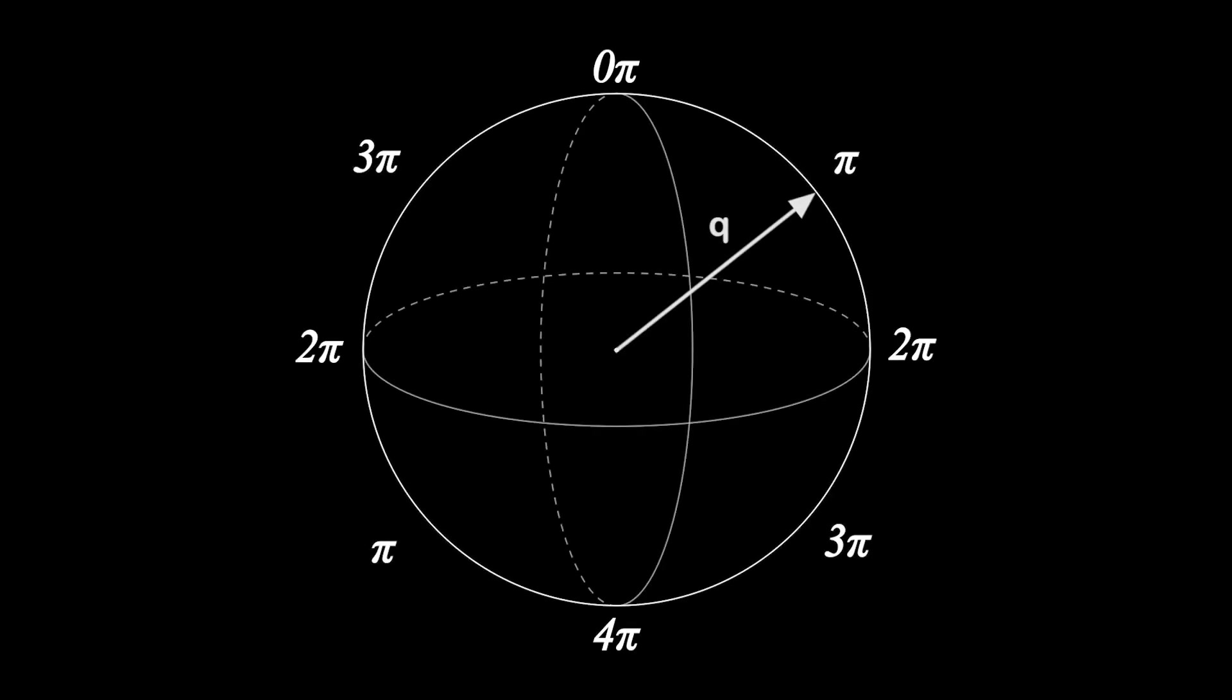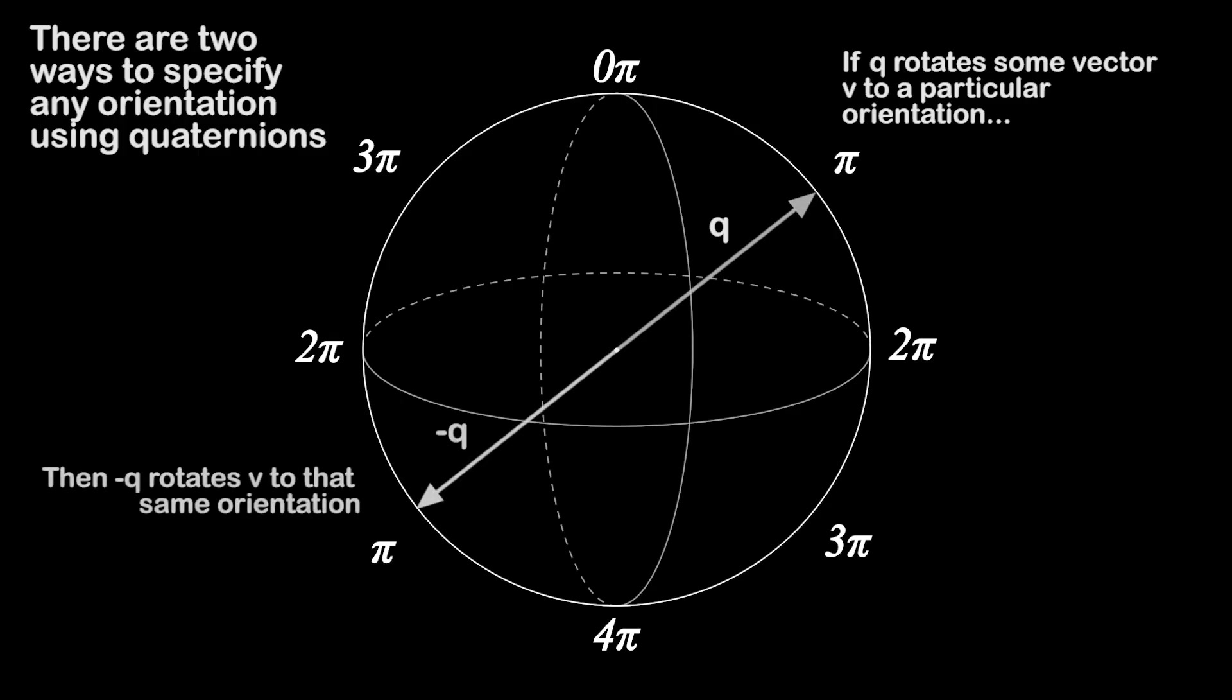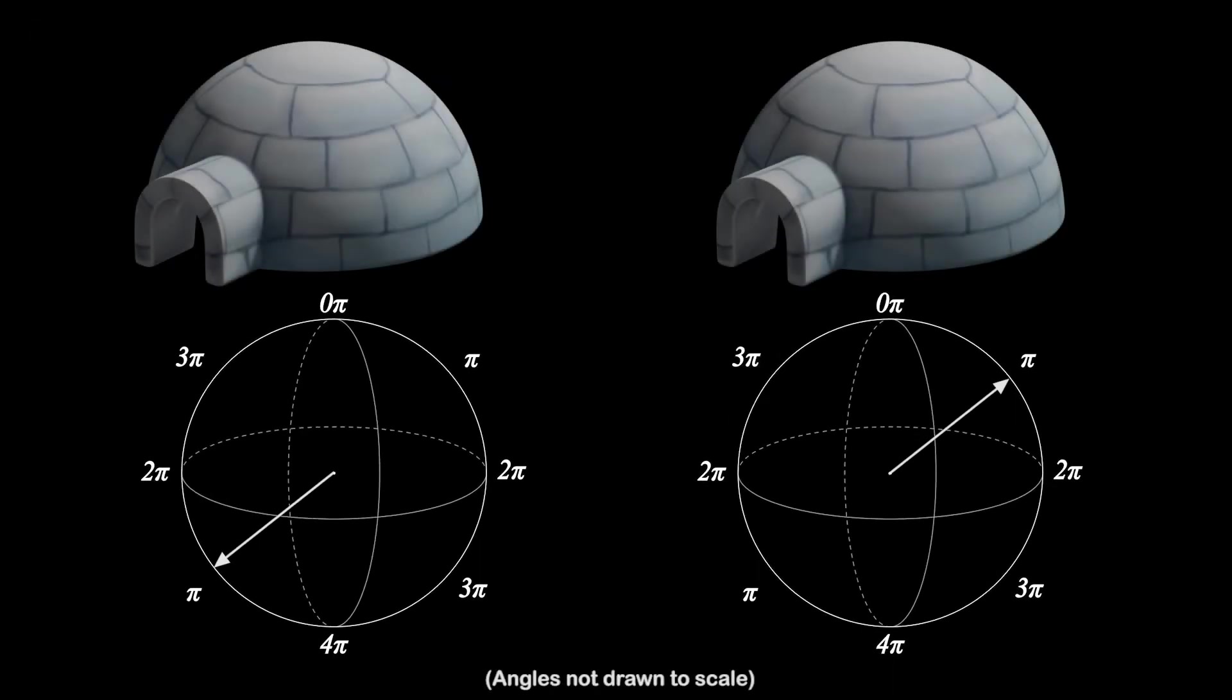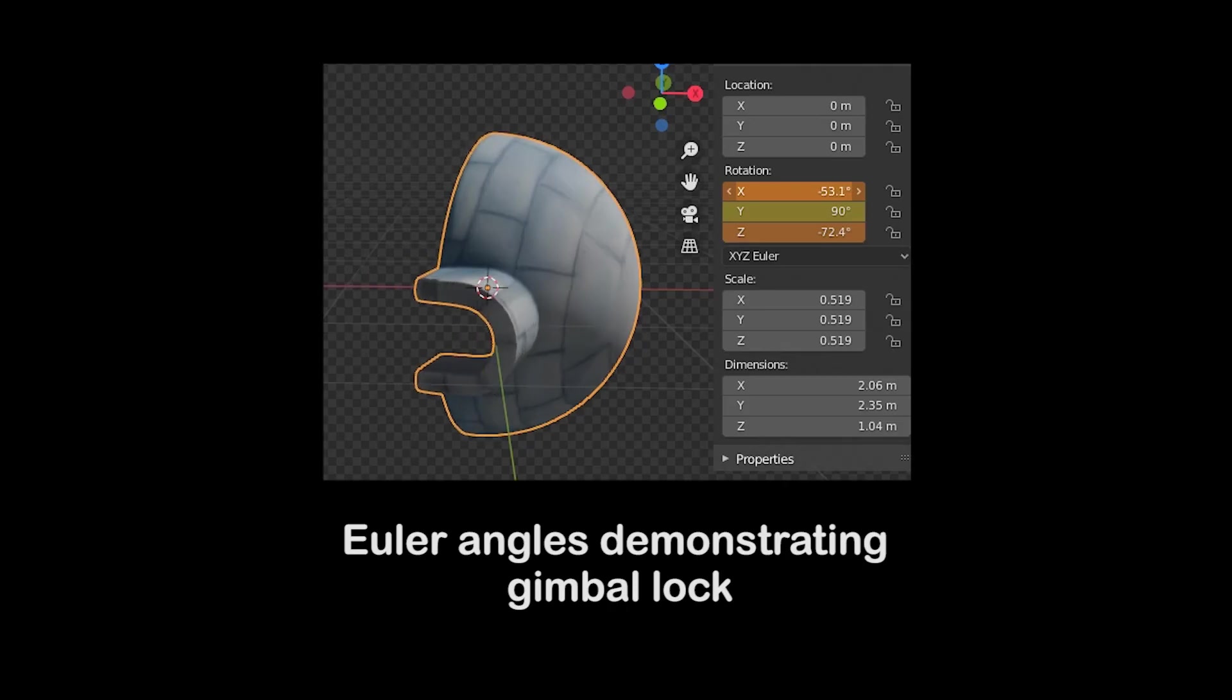A side effect of this doubling of the angles is that there are two ways to specify any orientation in 3d space using quaternions. If q rotates v to a particular orientation, then minus q will also rotate v to that orientation. This property is especially useful for animations when you want to interpolate between two orientations. It allows the programmer to choose whether to take the long path or short path to the new orientation. The fact that quaternions behave so nicely when interpolating is a major reason that they're often preferred over Euler angles and 3d graphics, which are prone to gimbal lock when two axes align during interpolation.